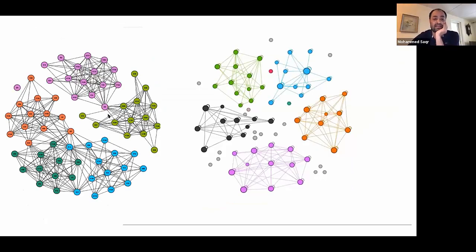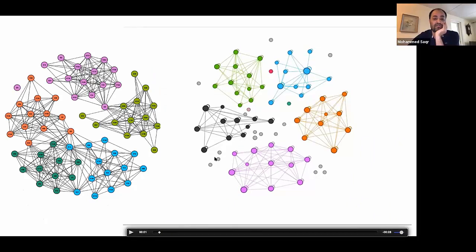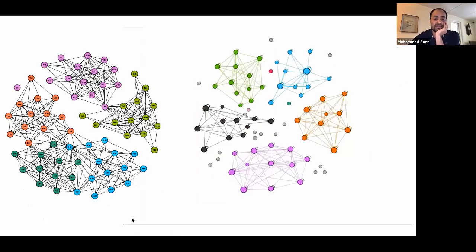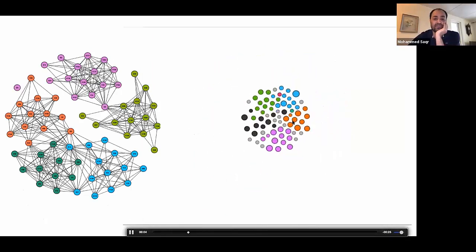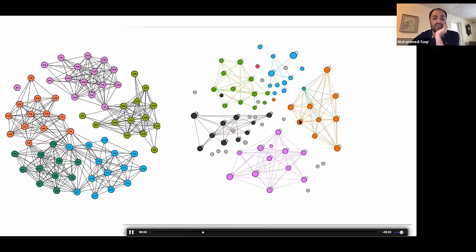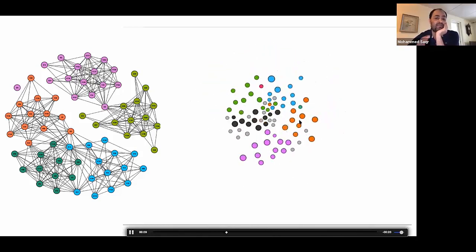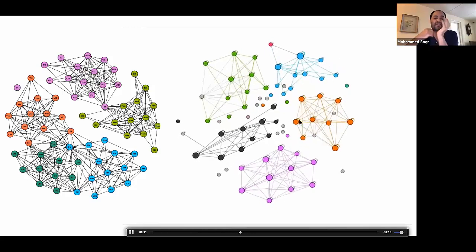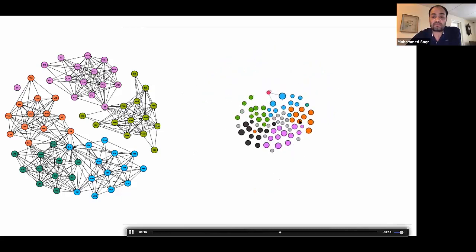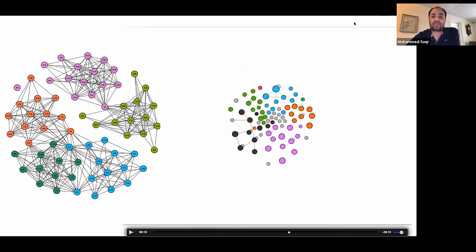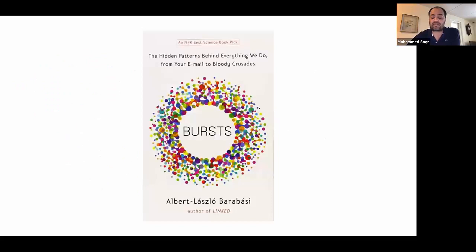This has been the dynamic network of the course. As you might see on the left side, it's a static picture, we see nothing. But on the right side you see the rhythm of interactions. I'll explain more what does it mean, but that rhythm, this burst in nature, is actually a title of a book one of the pioneers of network science have released a little while ago, where he said that the bursts are the hidden patterns behind everything we do, from your email to bloody crusades.